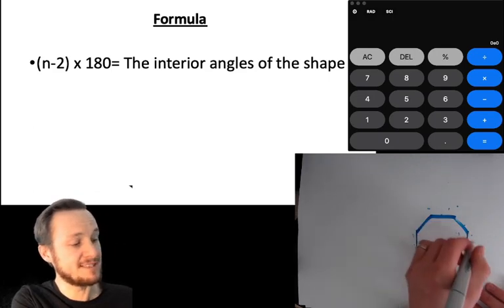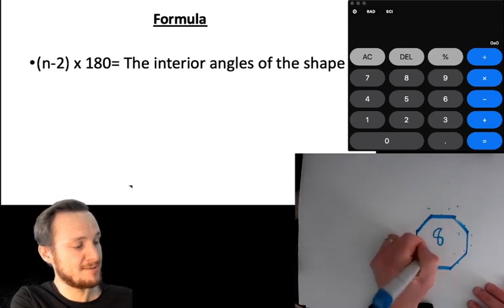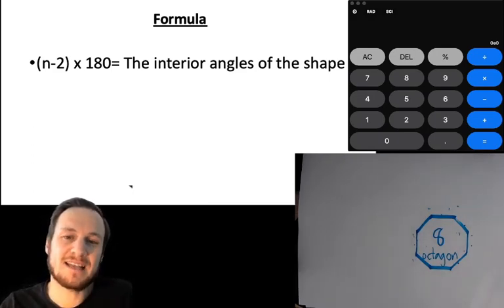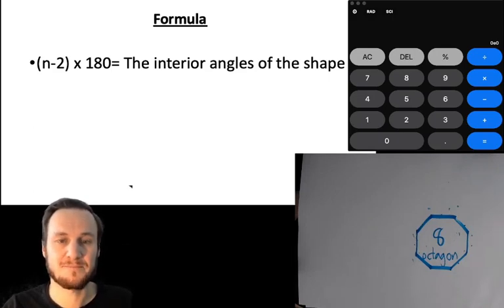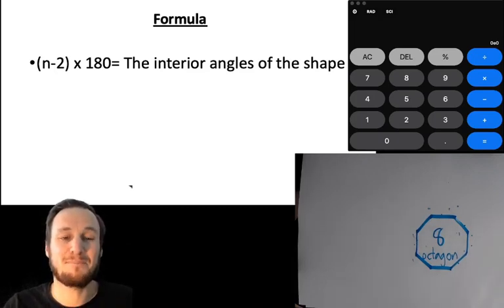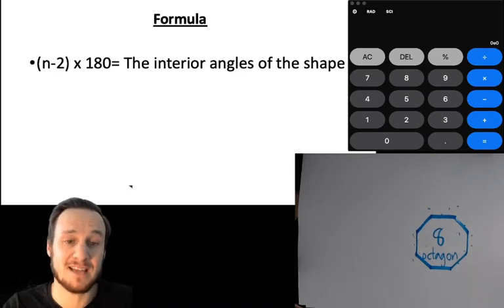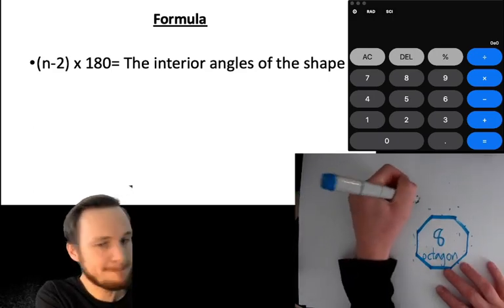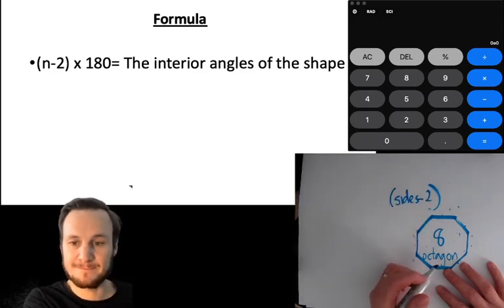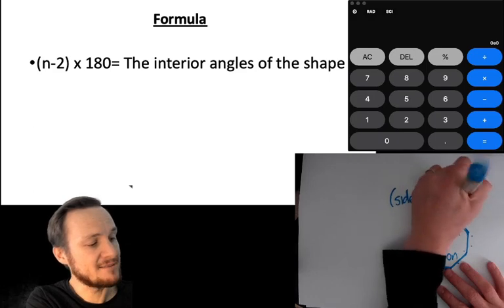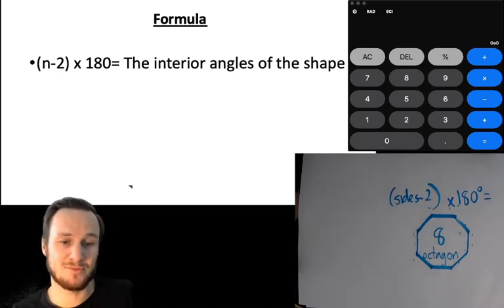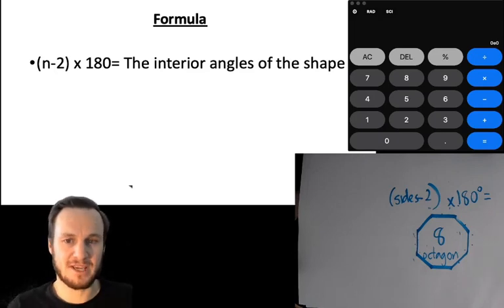Within an eight-sided shape, let's try and figure out how to solve what the inside angles are without getting out a protractor. Now with this formula at the top, when it says n, basically n means how many sides does it have. So if we can replace that n, we just have this: sides minus two, and then you times that by 180. So however many sides it has, you just subtract that by two and then you times by 180. Let's try it.